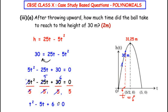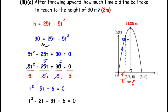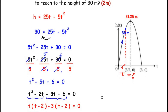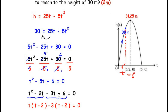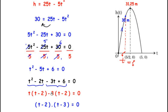We factorize t² - 5t + 6 = 0 by finding factors that multiply to +6 and add to -5. Those factors are -2 and -3. Grouping: t(t - 2) - 3(t - 2) = 0, which gives (t - 2)(t - 3) = 0. Equating each factor to zero gives t = 2 seconds and t = 3 seconds.